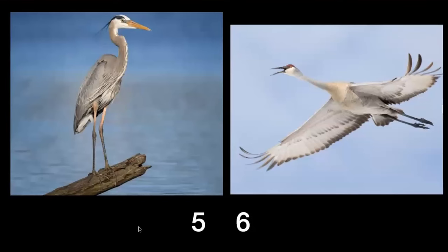Number five and six: is number five a Great Blue Heron or a Sandhill Crane? Is number six a Great Blue Heron or a Sandhill Crane? Look at the throat and neck — which one's neck is U-shaped in flight, which one is outstretched?